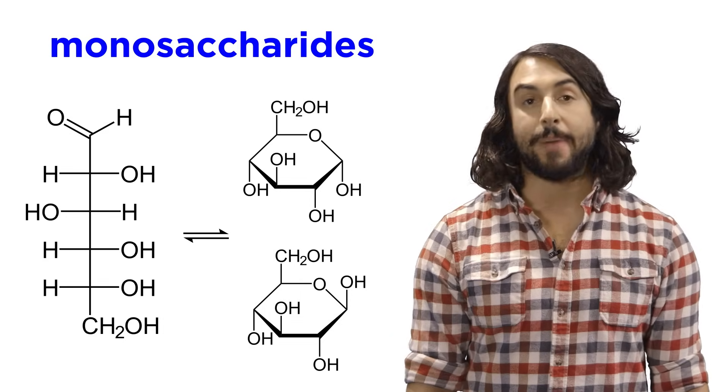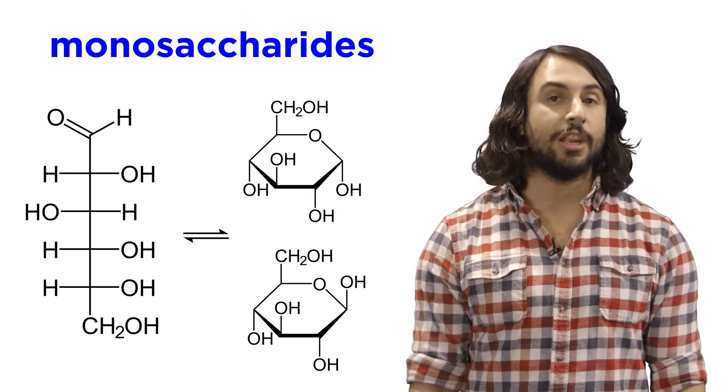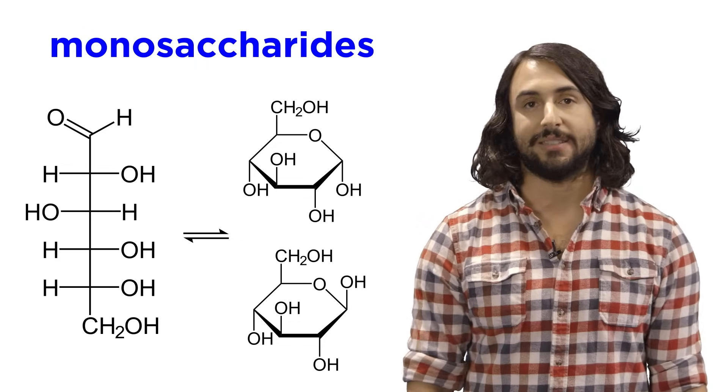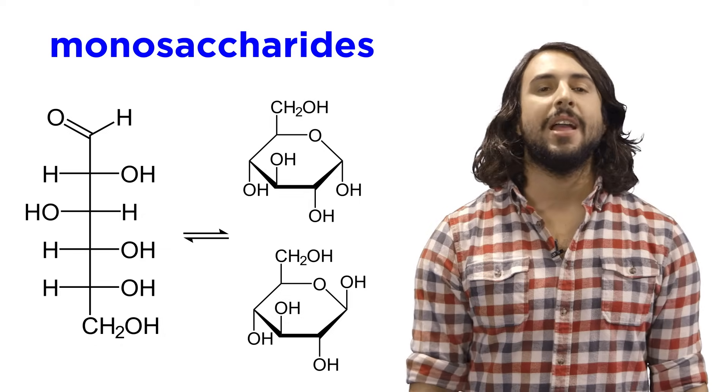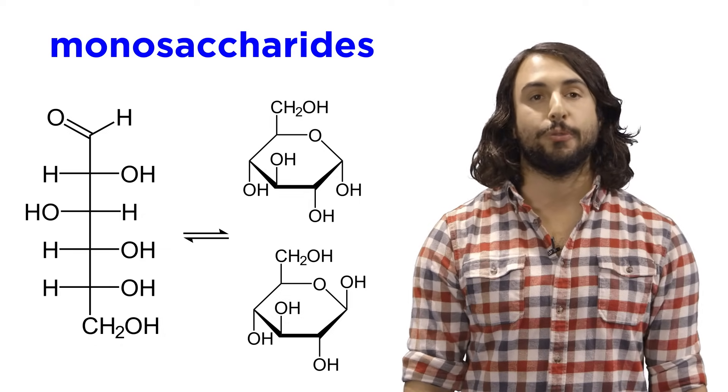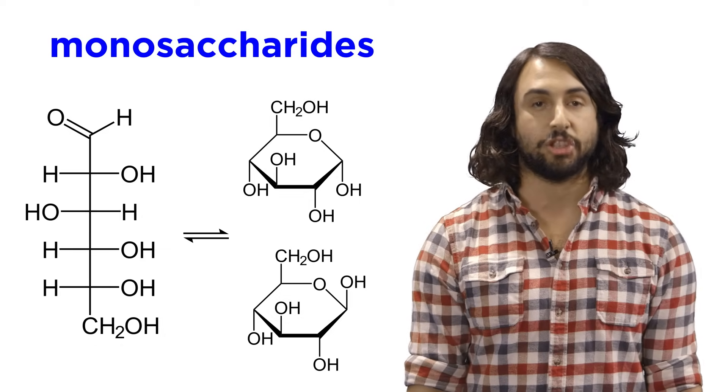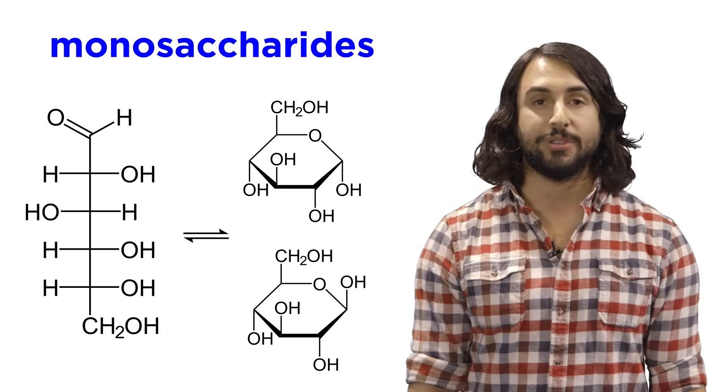So we now know a bit about monosaccharides, their linear form, and the way they cyclize, and it is the cyclic form that is able to polymerize to form long polysaccharide chains. Let's learn about those next.